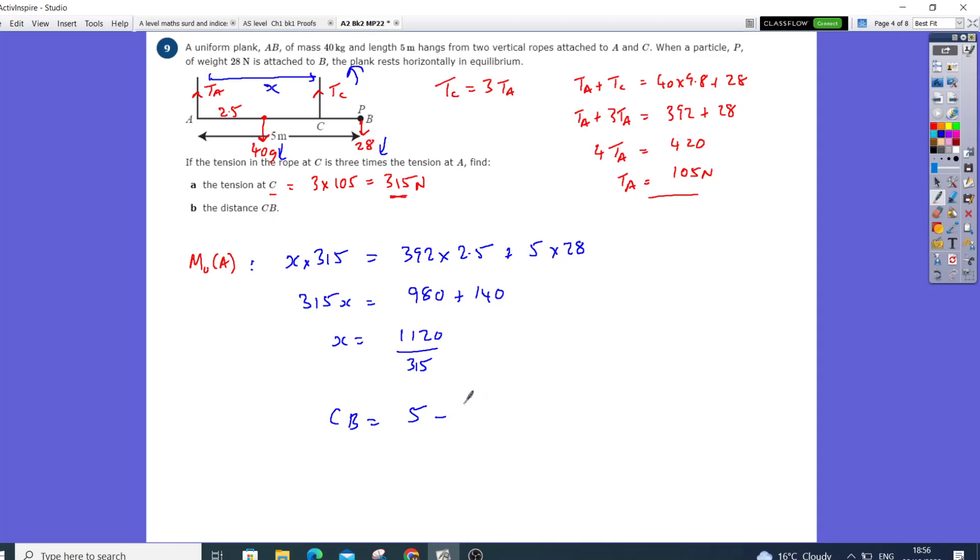So CB is going to be 5 take away... if I do 1120 over 315, it's going to be take away 32 over 9.